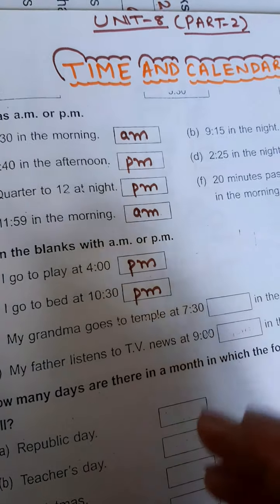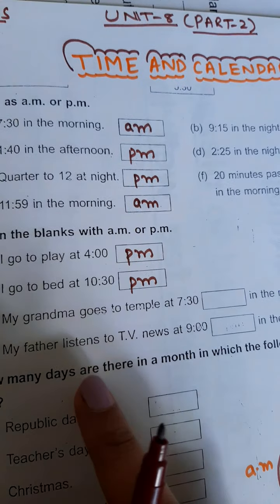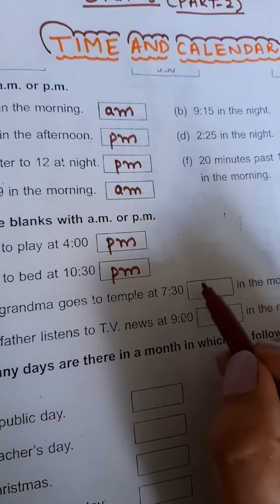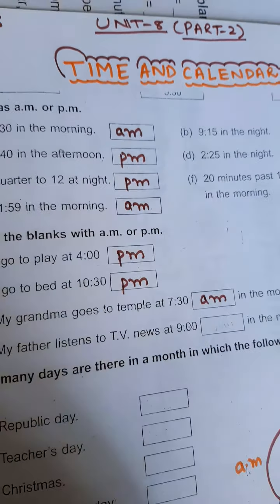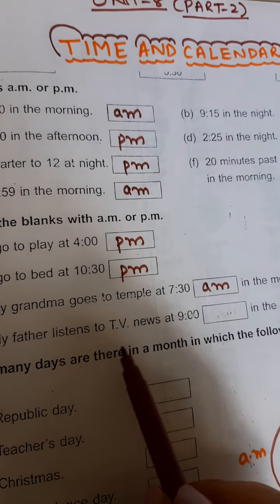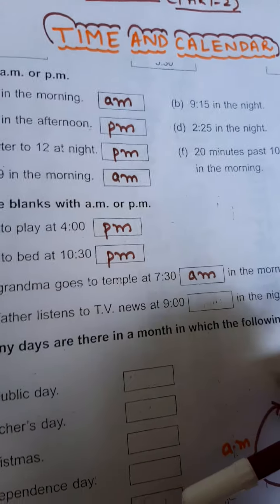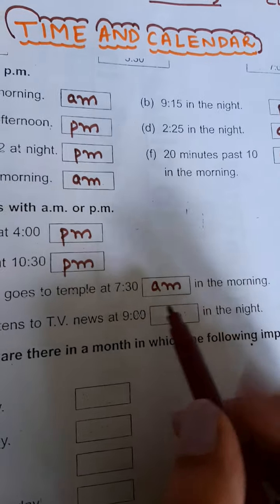My grandma goes to temple at 7:30 in the morning, so you have to write AM. My father listens to TV news at 9 in the night - in the night, so we have to write PM.